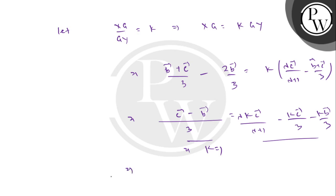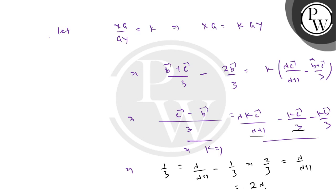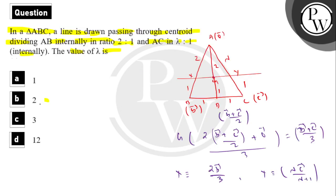Substituting K = 1 and comparing coefficients of vector C: left side gives 1/3, right side gives λ/(λ+1) − 1/3. So 1/3 + 1/3 = λ/(λ+1), giving 2/3 = λ/(λ+1). Cross-multiplying: 2λ + 2 = 3λ, therefore λ = 2. The answer is option B.